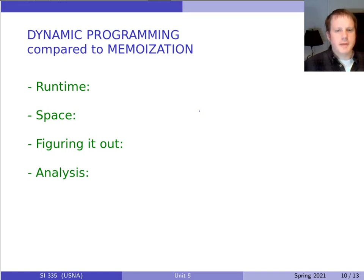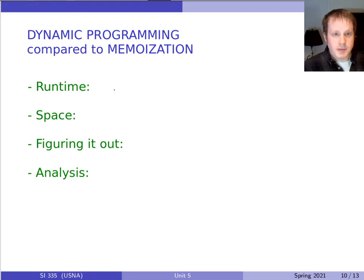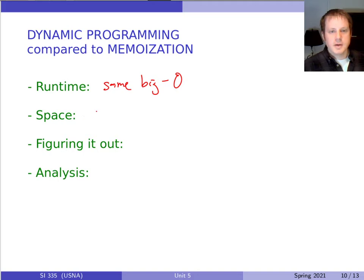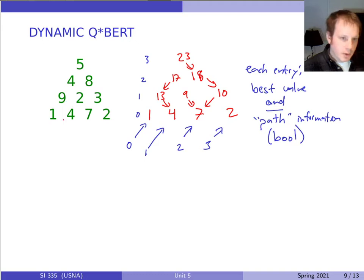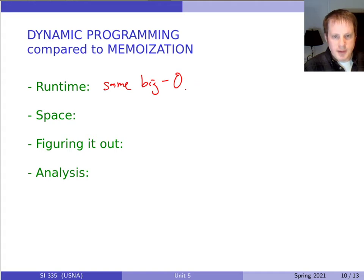In general, how does dynamic programming compare to the memoized version of the same algorithm? Well, the runtime is going to be basically the same — we're going to have the same big O runtime. For the recursive memoized version and the dynamic programming version, it's really the same amount of work for the same number of steps. It's just that here we start from the top and work all the way down then build back up saving things in a table, whereas there we save things explicitly in an array and start from the bottom working our way up. The main difference is that we get a big-theta bound, and the main thing is it's worst case.